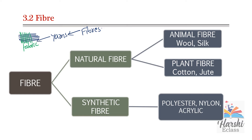We get wool from the fleece of sheep, goat, camel, yak, llama, and rabbit. Silk we get from the cocoon of silkworm.